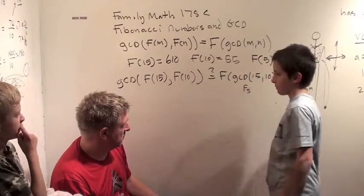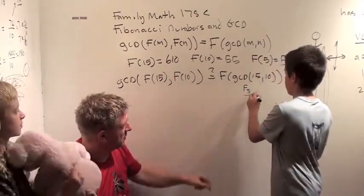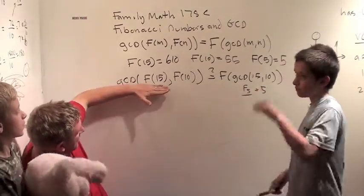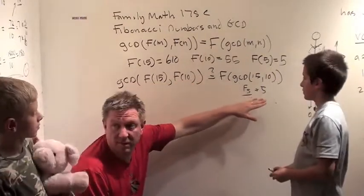F5 like that? Sure, if you want to write it F5 like that. Which equals? Which equals 5. Okay, so we're trying to see if the greatest common divisor of Fibonacci 15 and Fibonacci 10 equals 5.